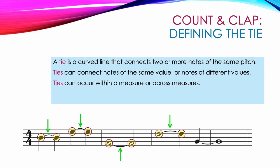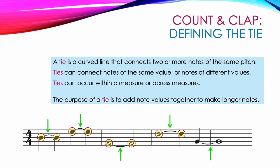Ties can occur within a measure or across measures. In the four examples we've already looked at, the ties are connecting notes that are in the same measure. But in our last example, we see a tie that connects the last note in the third measure to the first note of the fourth measure. The purpose of a tie is to add note values together to make longer notes.